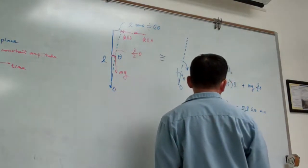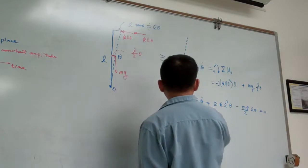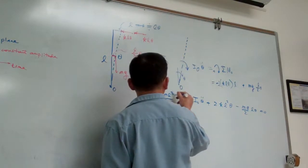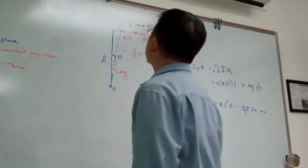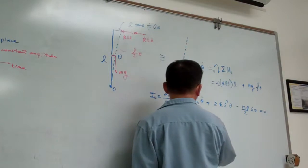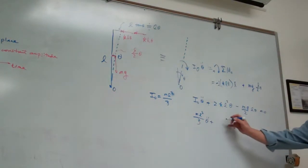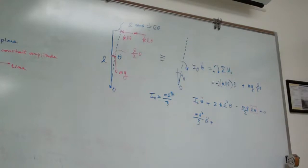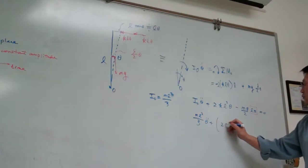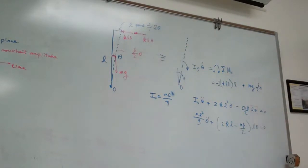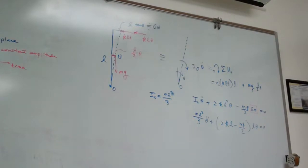Under this case, I_O equals ML^2/3. Let me plug in everything here: ML^2/3 theta double dot. Right now I'm going to arrange this term here, I'm going to factor out L theta. So we have (2KL - mg/L) times L theta.